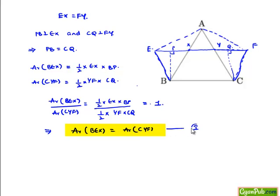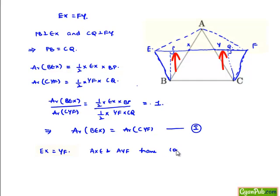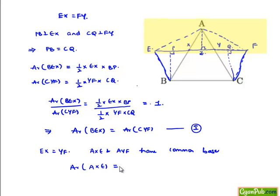Since EX is equal to FY, triangles AEX and AYF have a common perpendicular height AZ for both triangles. The perpendicular height for both triangles is equal and they have equal bases. Therefore, area of triangle AXE is equal to area of triangle AYF. Let this be equation (ii).